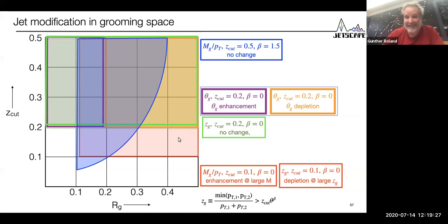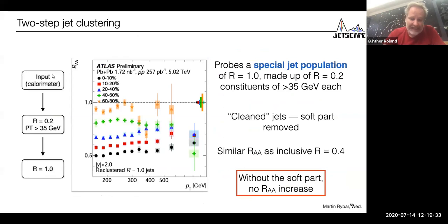This is corroborated by other measurements like this Atlas measurement where they construct R equals one jets by reclustering neighboring R equals 0.2 jets of 35 GeV. They lack all the soft components. Without the soft part, their RAA is essentially the same as that of smaller jets. This again points to the fact that it's really modifications of the soft constituents of the jets that make the difference here.